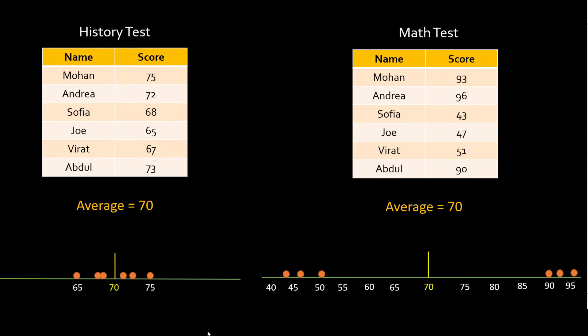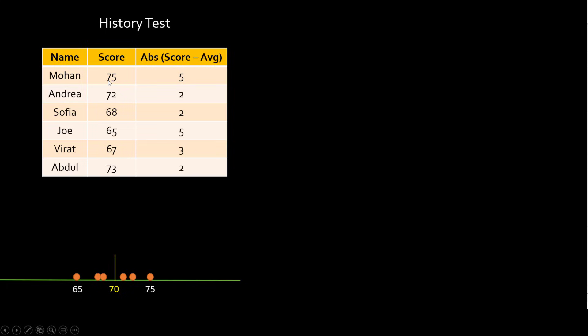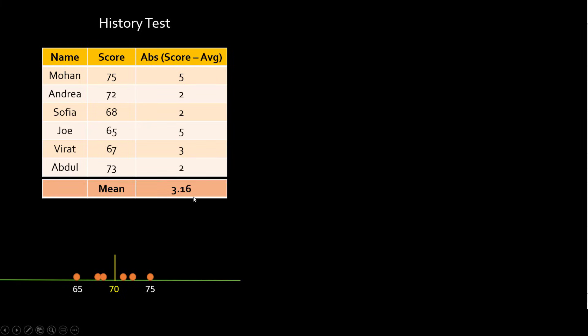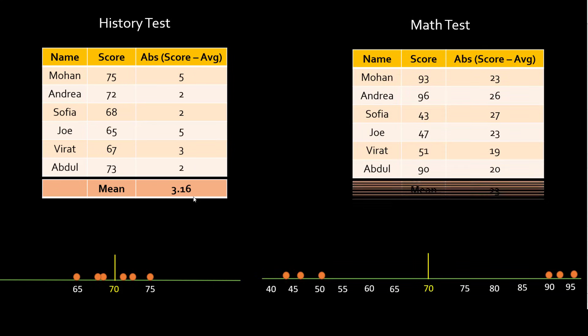A basic, common-sense approach would be to take the difference of each individual score with respect to the average. So let's do that: 75 is five points away from the average of 70; 72 is two points away; 60 is ten points away; 68 is two points away, and so on. If you take the mean of these differences, you get 3.16 for the history test. For the second case, doing the same thing gives a mean of 23.